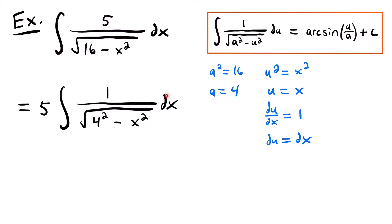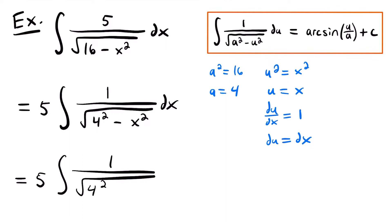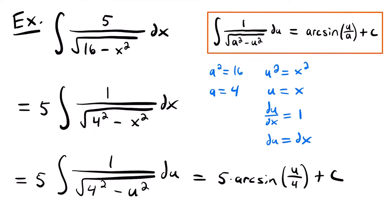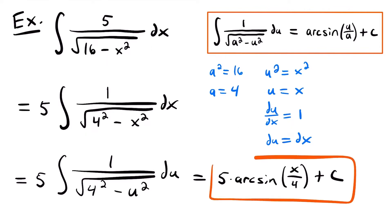Now we can replace dx with du and replace x with u, giving us 5 times the integral of 1 divided by the square root of 4 squared minus u squared times du. Applying the integration rule, this equals 5 times arc sine of u divided by a, which is 4, plus c. Finally, replacing u with x gives us the final solution to this integral.